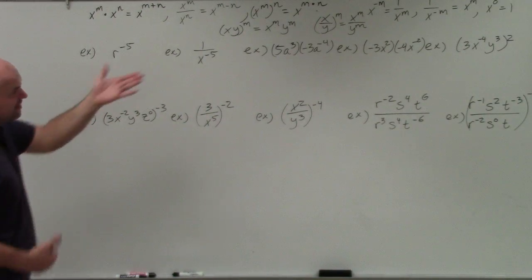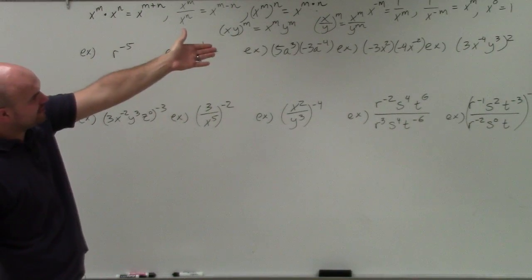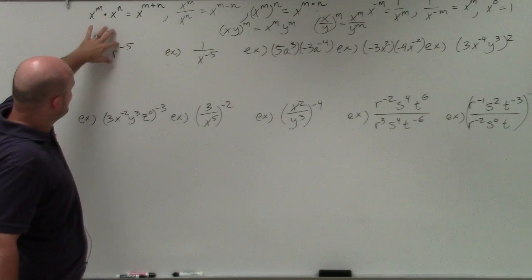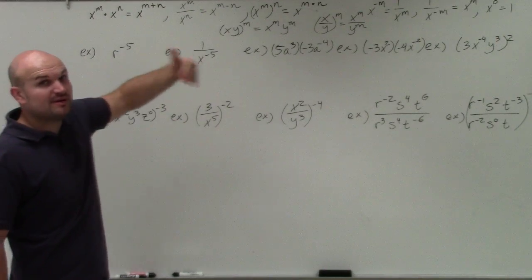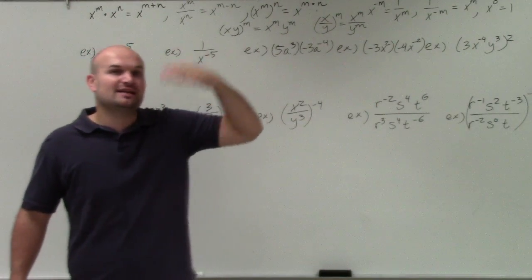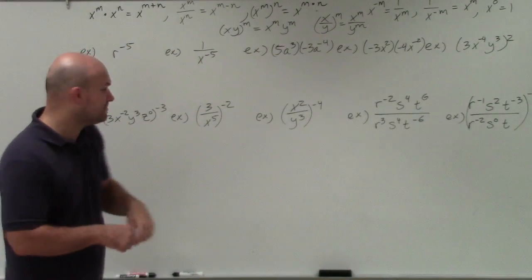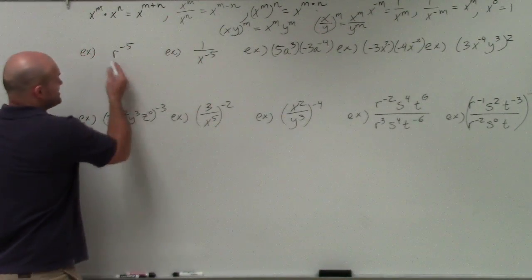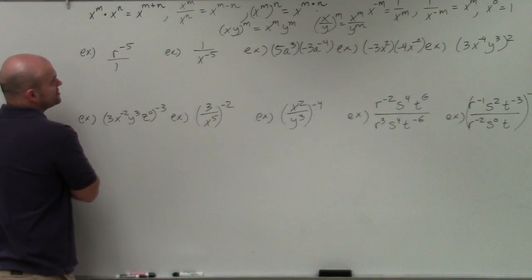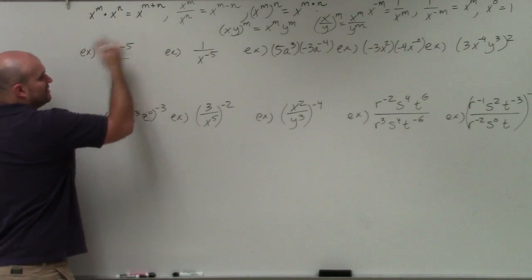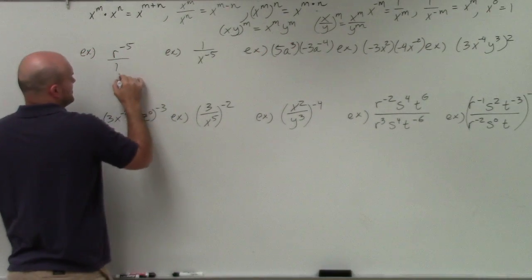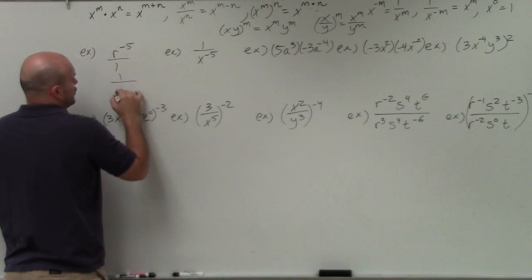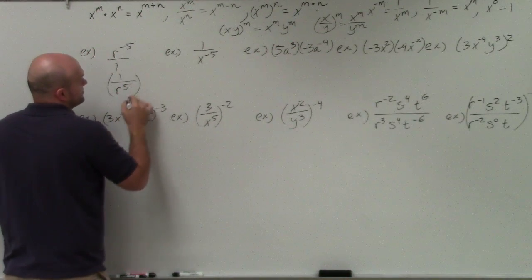So again, using our negative exponents rules here: whenever we have an exponent raised to a negative power, we can rewrite that as a positive power by rewriting it as its reciprocal. So basically, you could think of this as r to the negative fifth over 1. To rewrite this as a positive power, using our rule, I can rewrite this as 1 over r to the fifth.